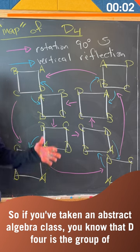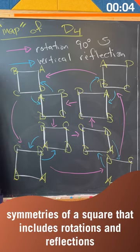If you've taken an abstract algebra class, you know that D4 is the group of symmetries of a square. That includes rotations and reflections.